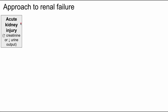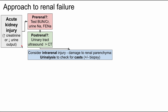Acute kidney injury is a sudden significant increase in creatinine or decrease in urine output. The first thing we always check is if it's pre-renal — we look at the BUN to creatinine ratio, the urine sodium, and the fractional excretion of sodium. If that's negative, we move on to post-renal, using ultrasound imaging to avoid radiation. If it's not post-renal, we consider intra-renal injury, which gets a little more complicated.